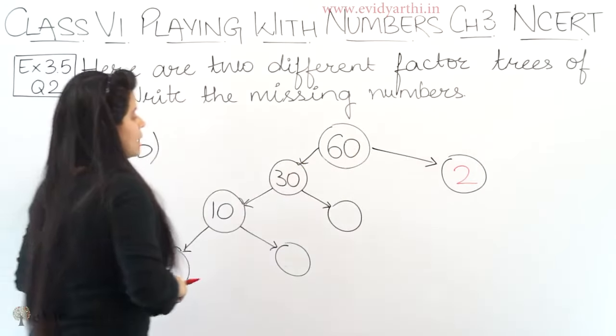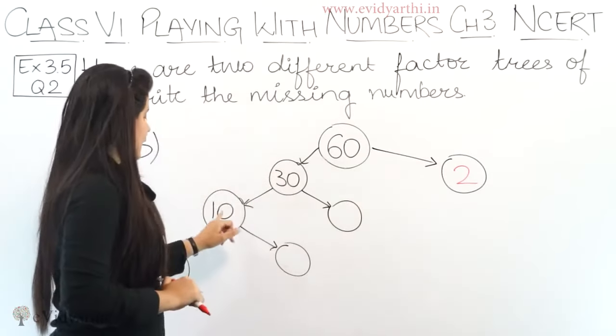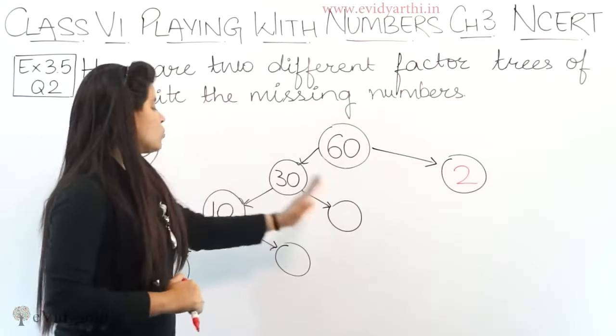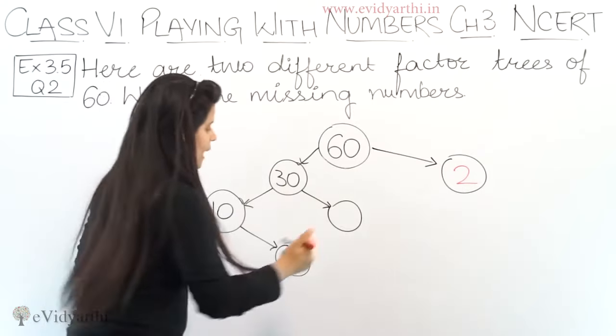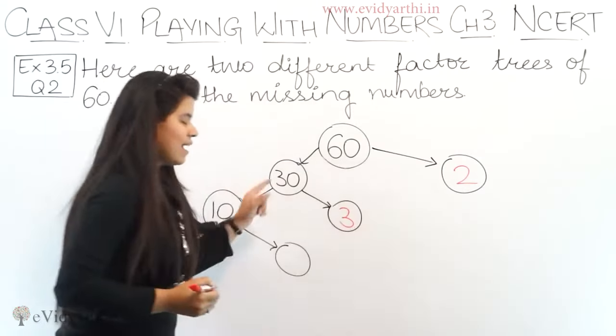Next, we have number 30 and we divide it into 2 parts. One is 10. Now what do we multiply 10 by to get 30? So obviously, 10 threes are 30.